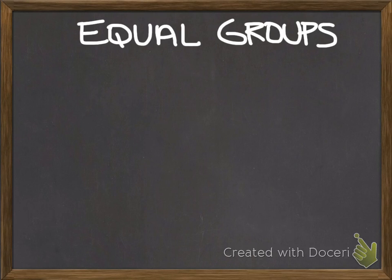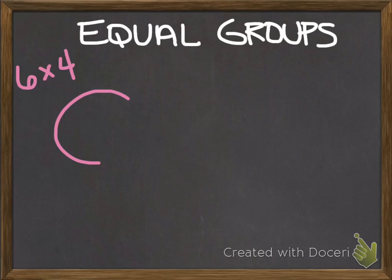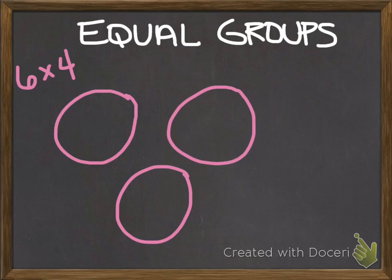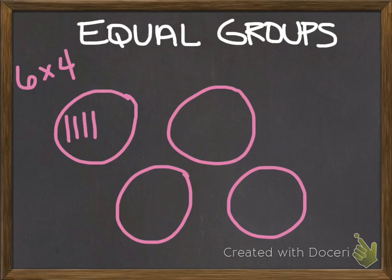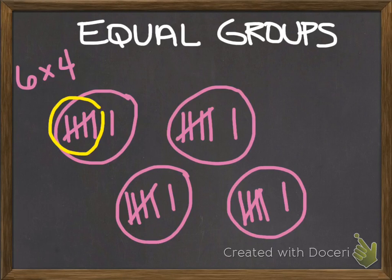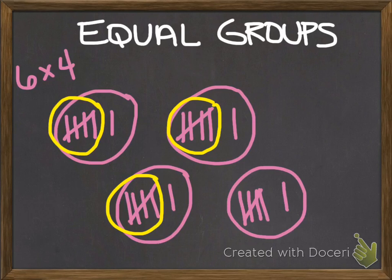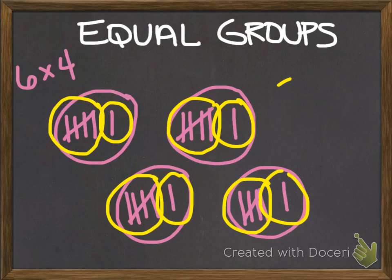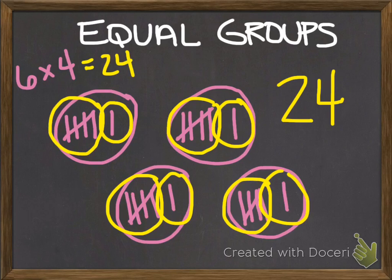So, let's start with equal groups. We know that she gave six candies to four people, so let's make our four groups. We already know that there are six in each group. Here we have four groups of six candies, and all I need to do to figure out how many there are total is to count all the candies. Counting by fives: five, ten, fifteen, twenty — twenty-one, twenty-two, twenty-three, twenty-four. When I count them all, I find out that I have twenty-four candies. So, six times four equals twenty-four. We know she gave away twenty-four candies. What a nice friend.